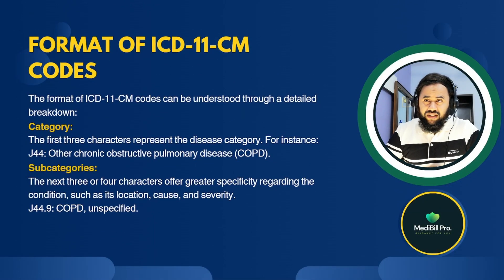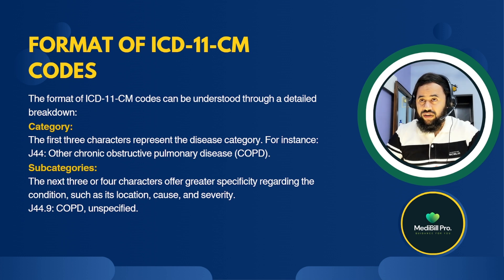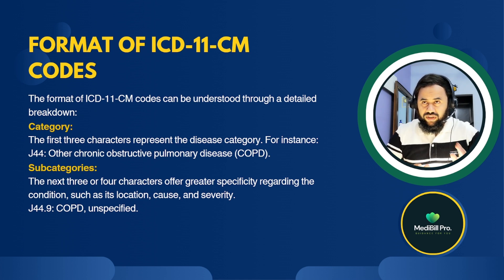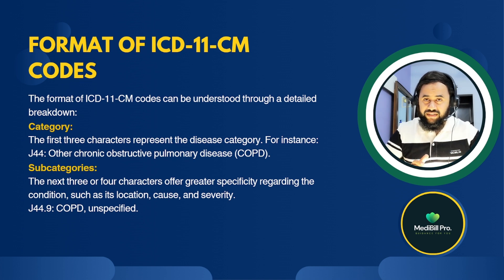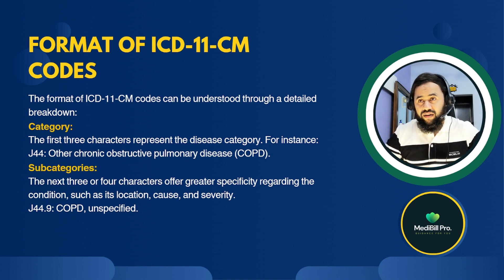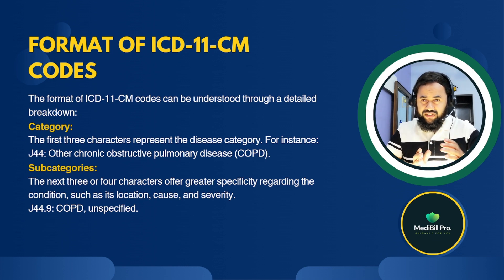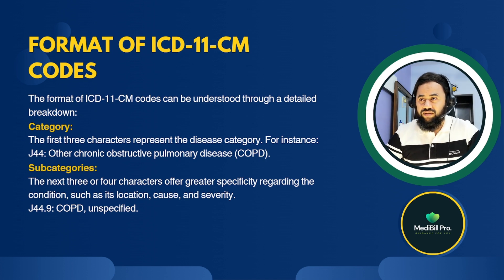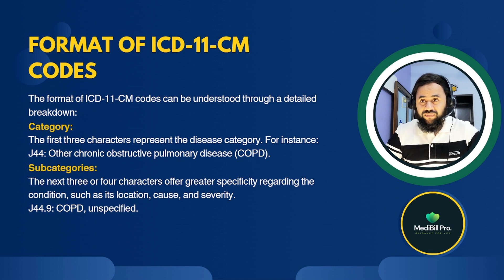Now we will see the format of ICD-11 codes through a detailed breakdown. The first three characters represent the disease category — for instance, J44 equals 'Other Chronic Obstructive Pulmonary Disease' (COPD). The subcategories use the next three or four characters to offer greater specificity regarding the condition, such as its location, cause, and severity. For example, J44.9 is 'COPD, unspecified.'